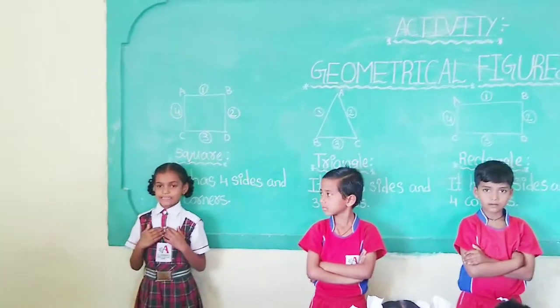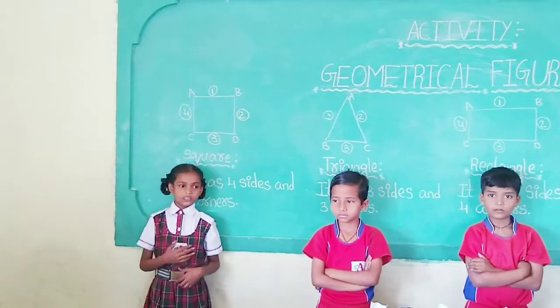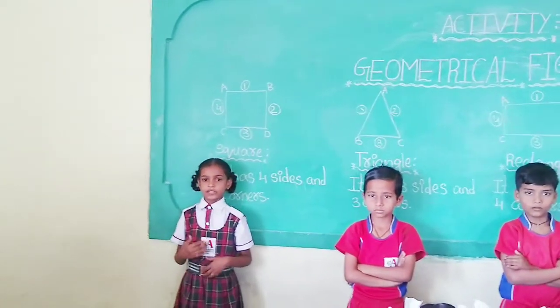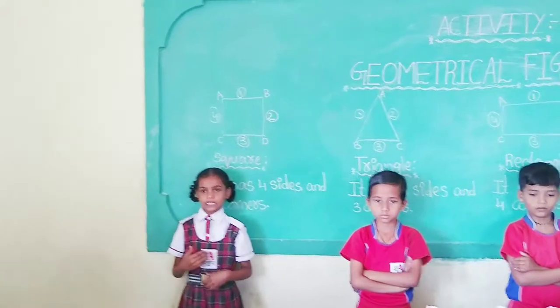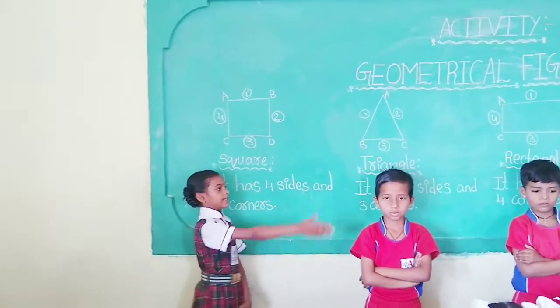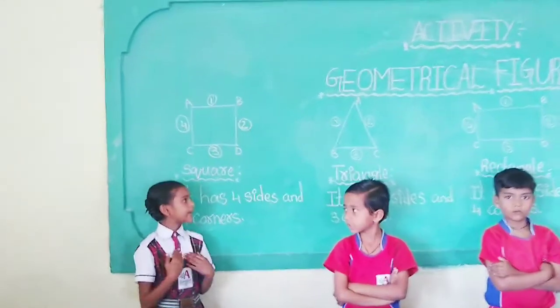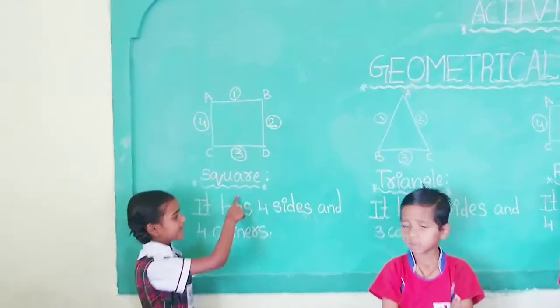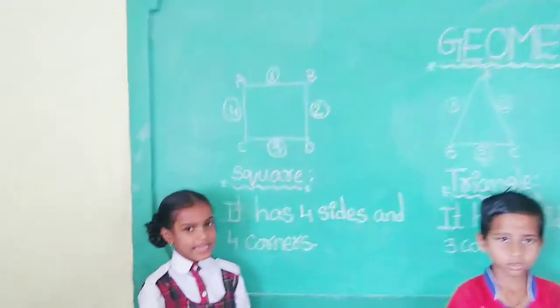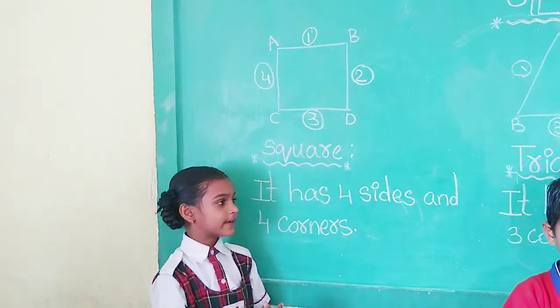Hi, my name is Lakshmi Trasanna. Today I am going to tell you about geometrical figures. My figure name is square. A square has all sides are equal.